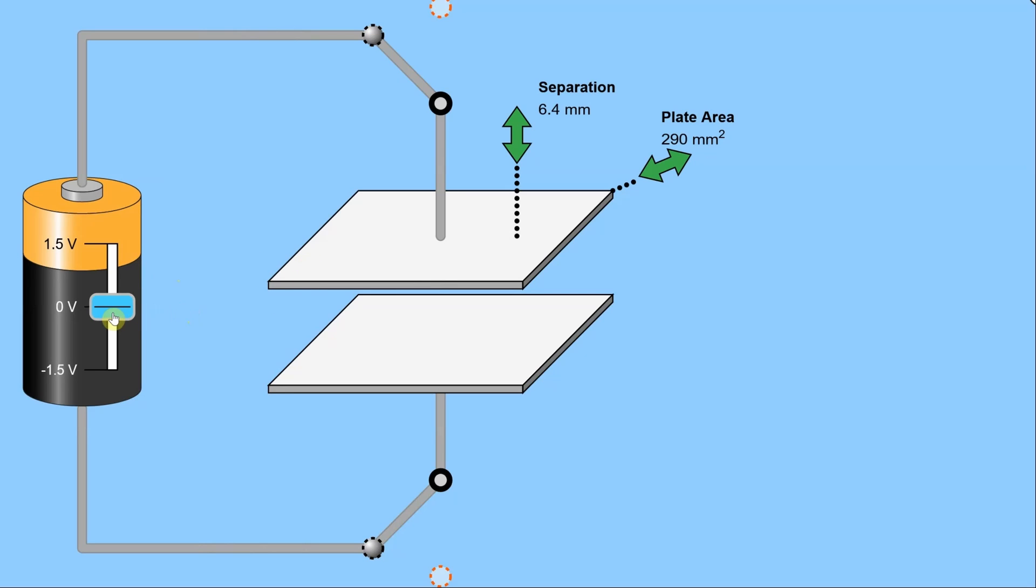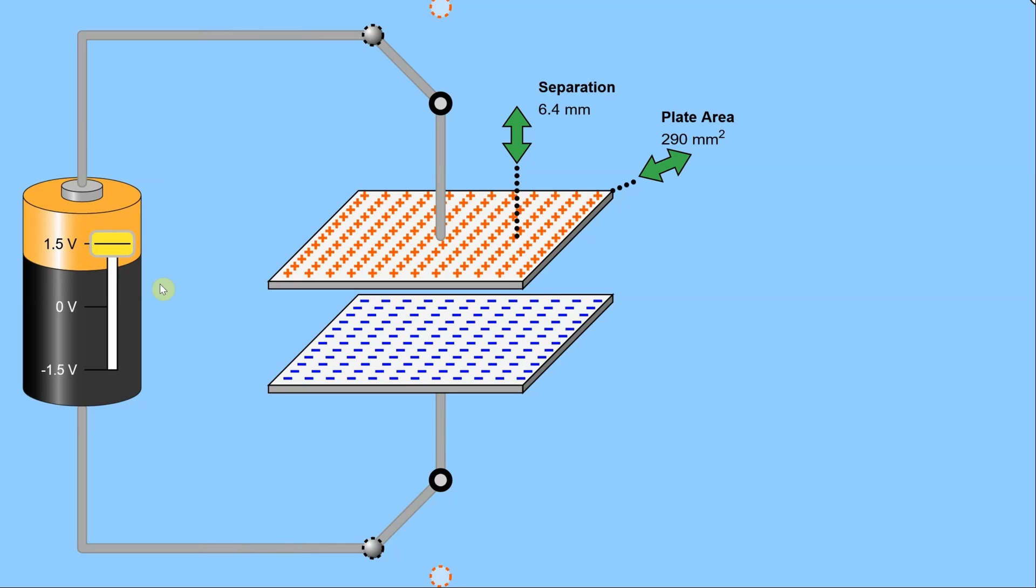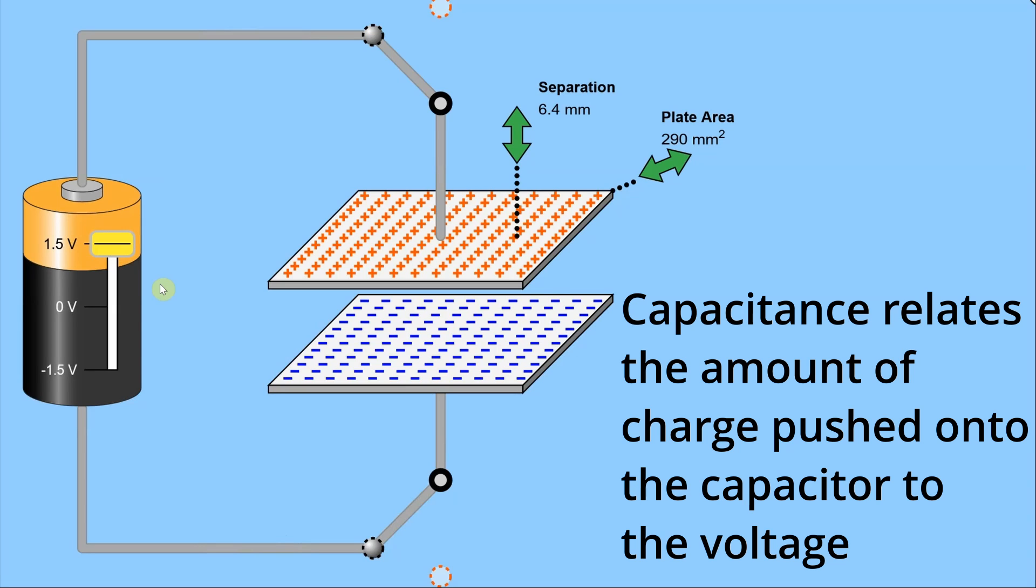Now look what happens as I go over to this battery and I start increasing the voltage. So I turn it up a little bit, leave it there. I've got a few charges, turn it up a little bit more, and you can see some more negative charges go to the bottom plate, positive charges to the top plate. And the more voltage that I apply, the more charges get pushed onto the plates. So what it looks like is a higher voltage leads to more charge. And in fact, experiments have shown that there's a linear relationship between voltage and the amount of charge that can be pushed onto a capacitor or into parallel plates like this. And the constant of proportionality is the capacitance. And that relates the amount of charge that can be pushed onto a capacitor per voltage that's pushing the charge.